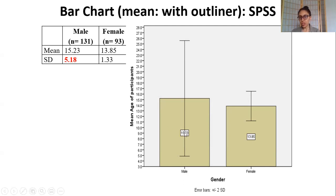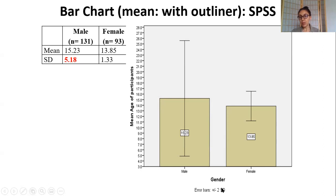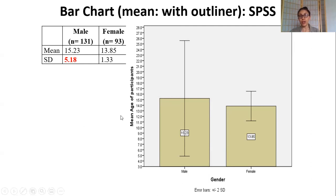In the bar chart with an outlier, the standard deviation is 5.18 and the error bar is much longer, which would make you doubt the data. But it is not as intuitive as a box plot for identifying the specific problematic case. My best practice is to use box plots to identify outliers — it's quick and easy. This is called a cluster bar chart. You can also have stacked bar charts where bars are stacked horizontally on top of each other rather than side by side. This cluster bar chart is for a categorical variable with three age groups and gender.